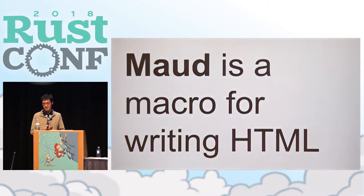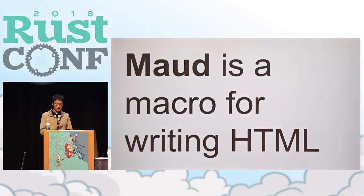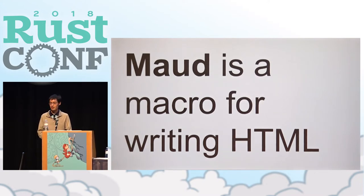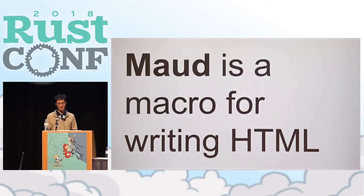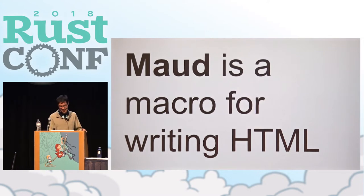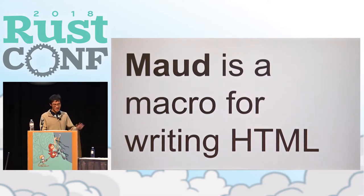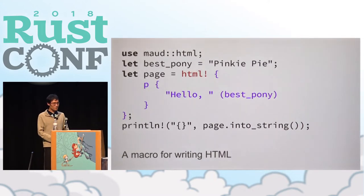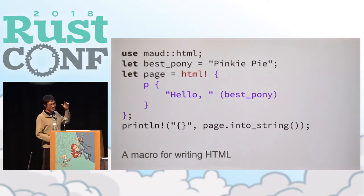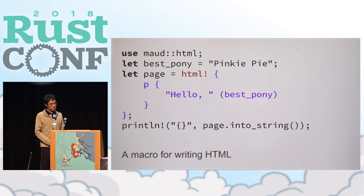Put simply, Maud is a procedural macro that enables you to write HTML inline within your Rust programs. And yes, it is named after the My Little Pony character — it was a while ago, please don't judge. To help understand how Maud works, let's take a look at an example. This program generates a bunch of HTML and prints it to standard output.